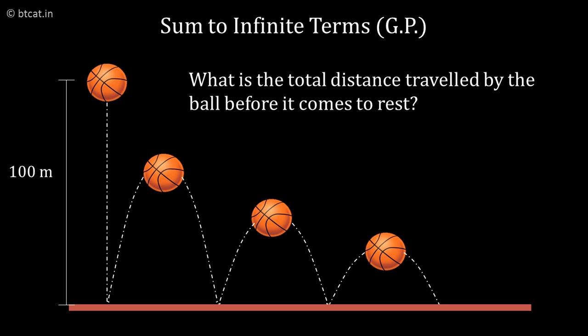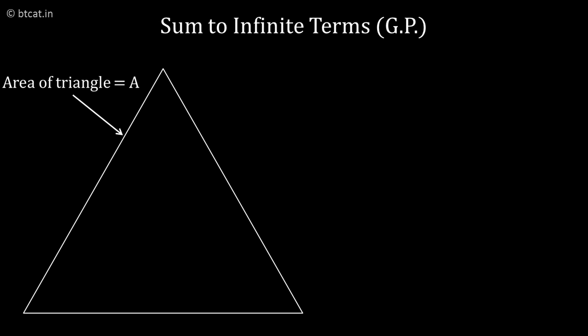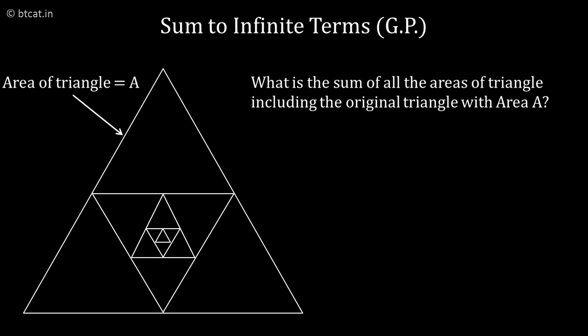So let us take one more question which is in the application of geometry and has also come in CAT various times. There is a triangle whose area is A. It's an equilateral triangle whose area is A. Now the midpoints are joined to form another triangle, and then we keep on doing this process by joining the midpoints of the emerging triangles till infinity. What is the sum of all the areas of all the triangle areas which are formed including the original one? So in other words, if you apply a